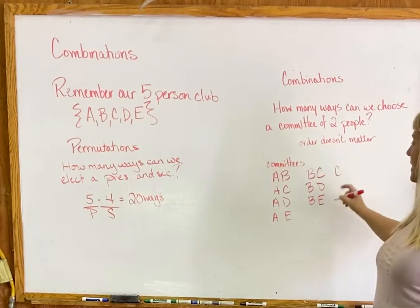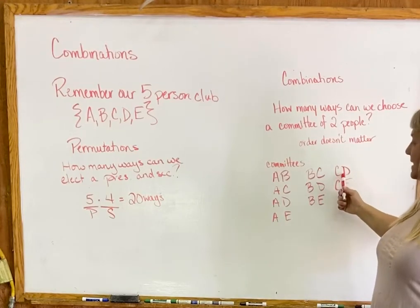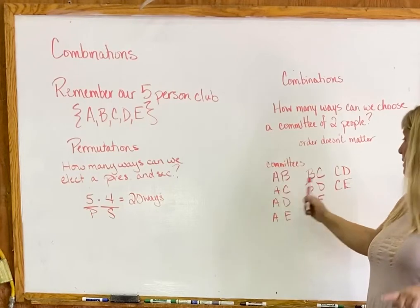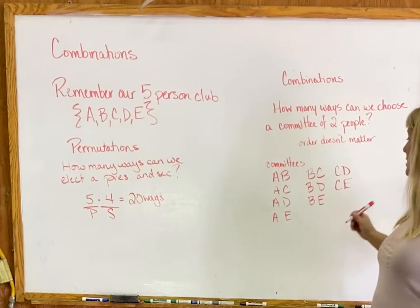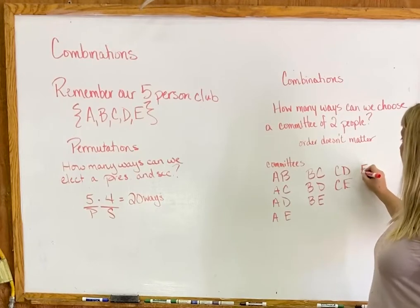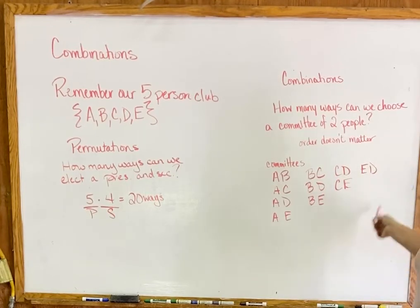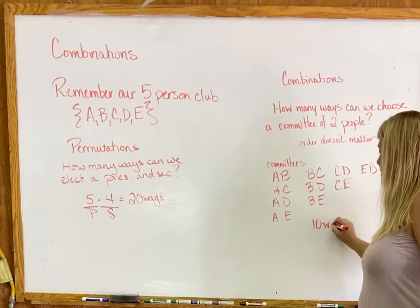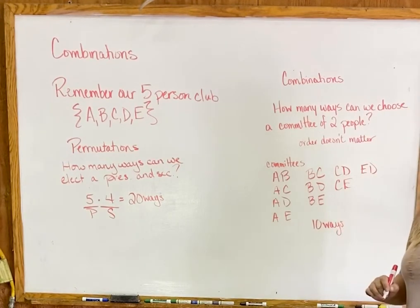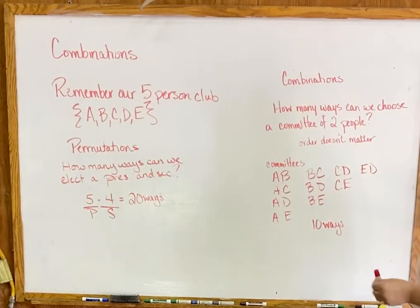Continuing the list: the committee could be CD or CE — but not CA or CB, since those are already written down. When order doesn't matter, you don't have to worry about switching back and forth. Finally, it could be DE. So these are all the different options: counting them up gives us 10. So there are 10 ways to choose a committee, versus 20 ways to elect a president and secretary.